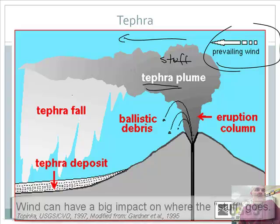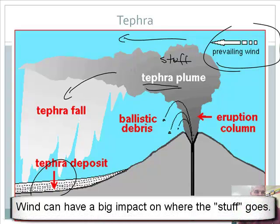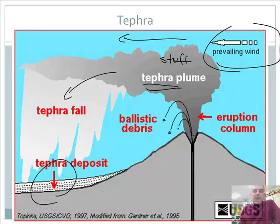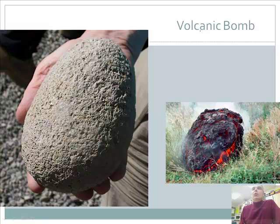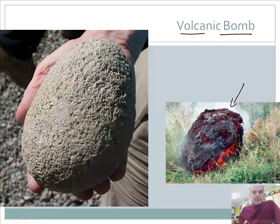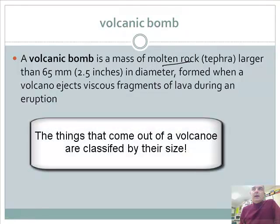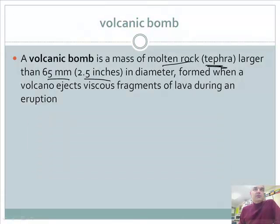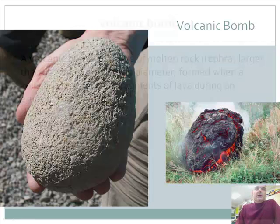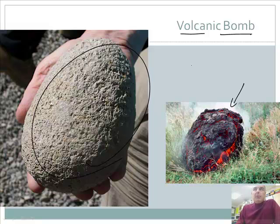Let's talk about a volcanic bomb. A bomb is something very big that lands somewhere — a big molten piece of rock that flew through the air, hopefully not on your head. The definition: it's a mass of molten rock, a tephra, larger than 65 millimeters (two and a half inches) in diameter, formed when a volcano ejects viscous fragments of lava during an eruption.